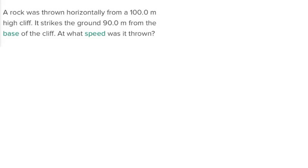So we have a rock thrown horizontally from a 100 meter high cliff and it strikes the ground 90 meters from the base of the cliff. We are trying to figure out the speed at which it was thrown, and the key here is that it was thrown horizontally, so we know that we're just looking for the x velocity.